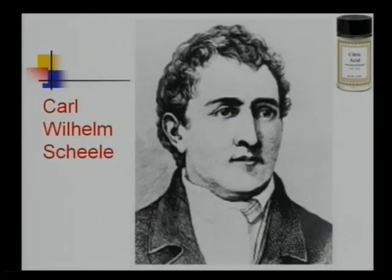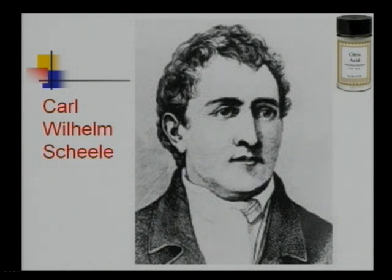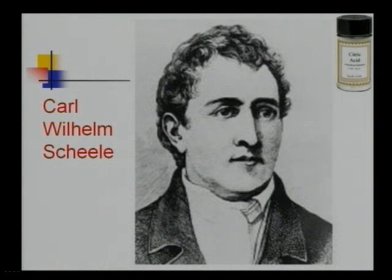Going through the history of how citric acid is produced: Karl Wilhelm Scheele in 1784 was the first — a Swedish chemist — to find citric acid in lemon juice, and he was the first to crystallize crystals of citric acid. In 1893, Wehmer established the occurrence of citric acid as a microbial metabolite. Then in 1917, James Currie recognized that citric acid accumulates in the cultures of Aspergillus niger. From that time, Pfizer was the first company to produce citric acid on a commercial basis.